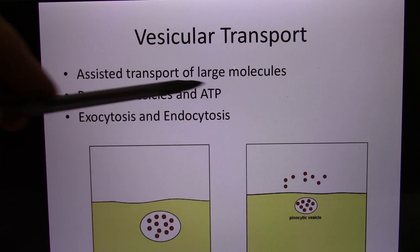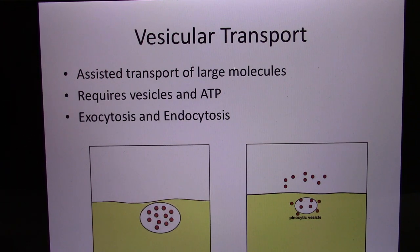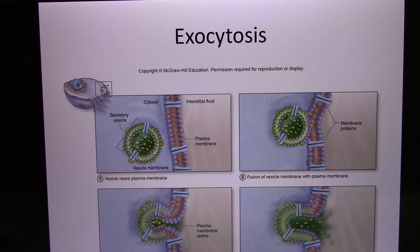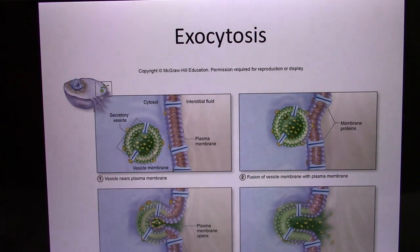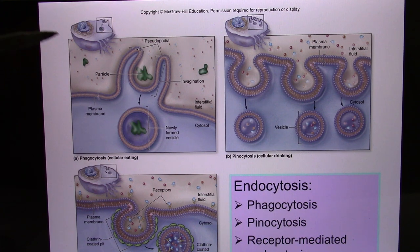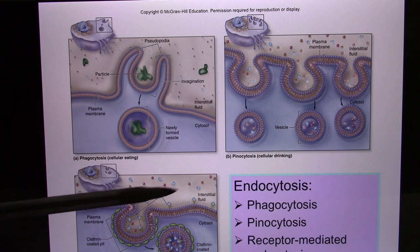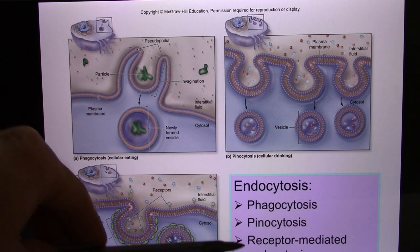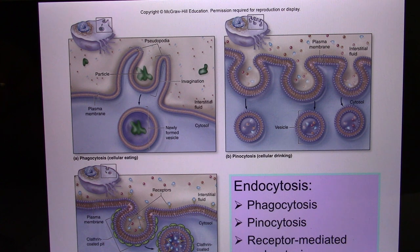If they move in, that's endocytosis — like your white blood cells detecting bacteria and taking them in. So molecules can move in or move out; they all require ATP, so they're still active transport. Endocytosis can be put into three different categories depending on the scale: phagocytosis, pinocytosis, and receptor-mediated endocytosis.